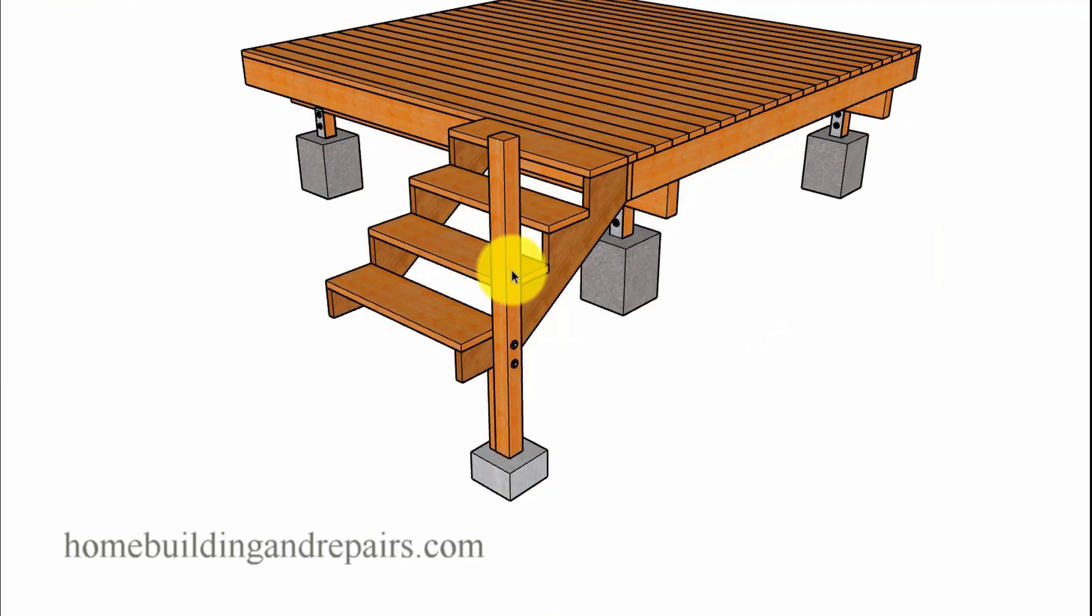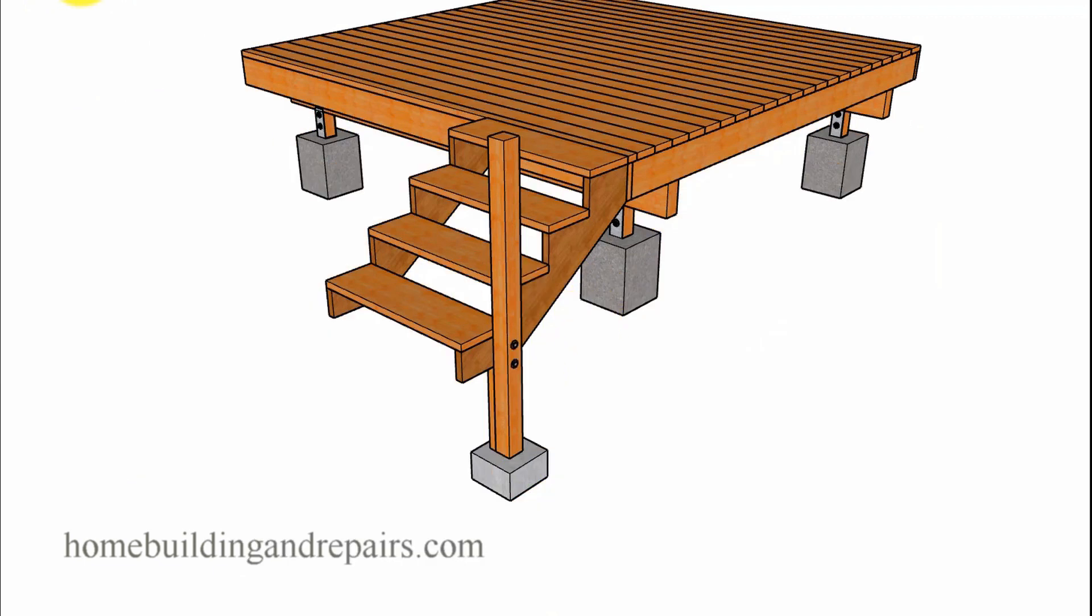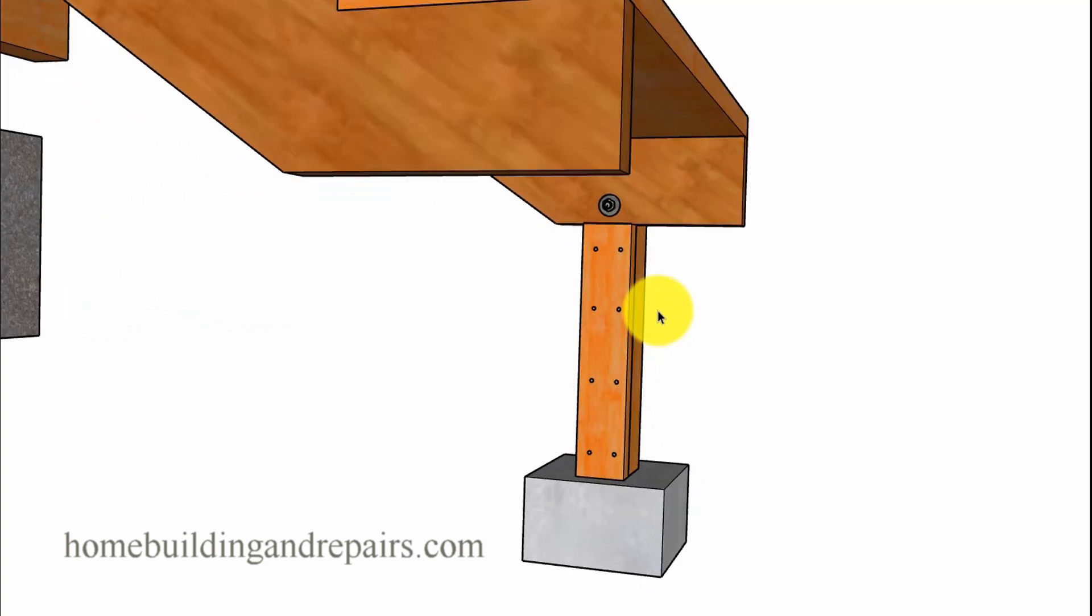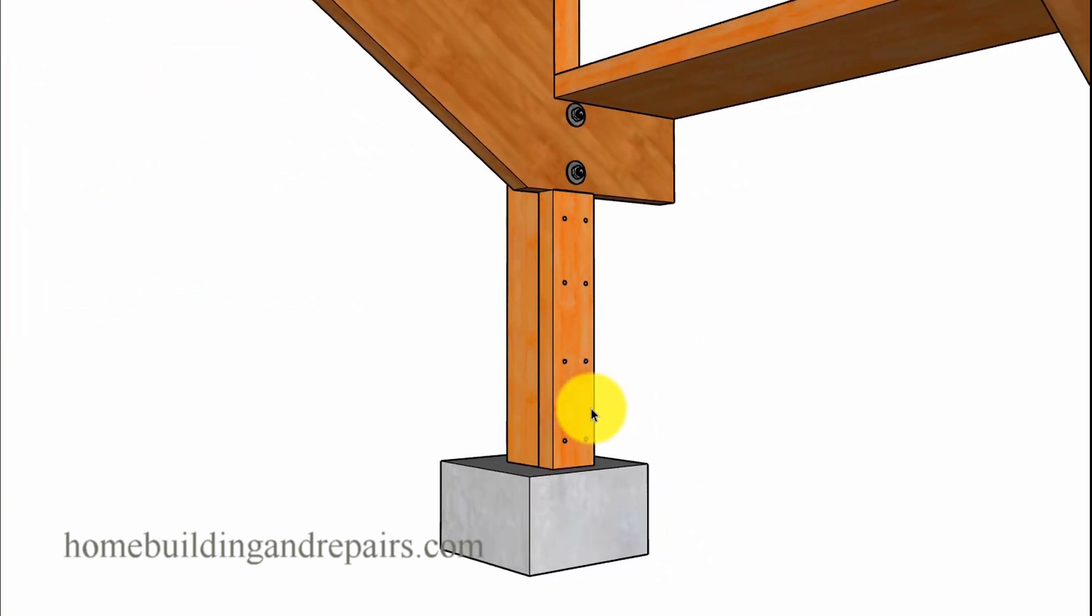Let's get back to what they require for a post that's going to be used as a handrail. Same nailing schedule for the two-by-four. The only difference is they require two half-inch diameter bolts to connect the stringer to the post.